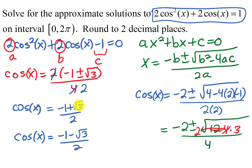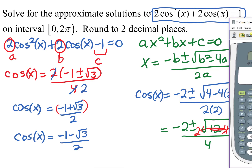Now we use the calculator. It's important to put parentheses around the numerator so the entire expression is divided by 2. Entering negative 1 plus the square root of 3, close parenthesis, divided by 2, gives approximately 0.366025. That's what cosine x equals for the first case.